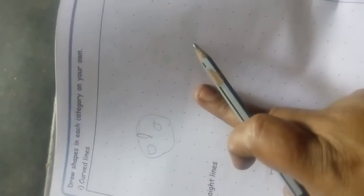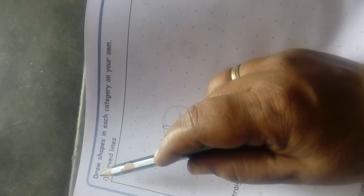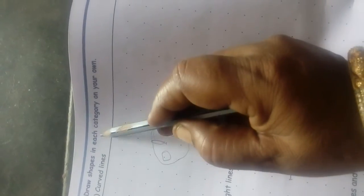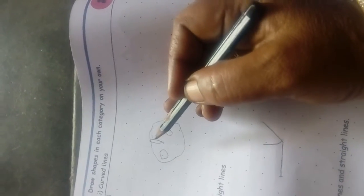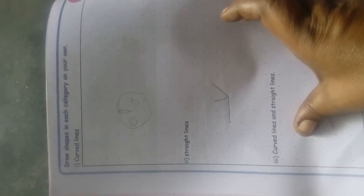Let's see the remaining topic. Draw shapes in each category on your own. You will be looking for different patterns. You are going to draw. There are dots. You will see the dots. There are dots here. First, you will see the curves.